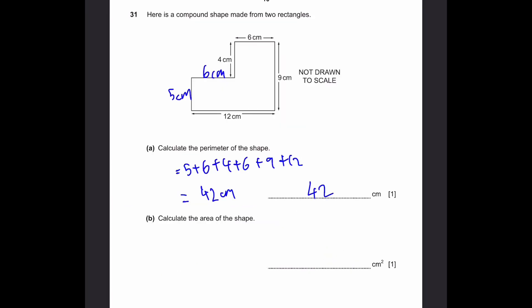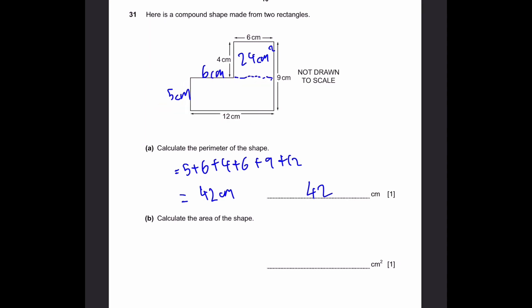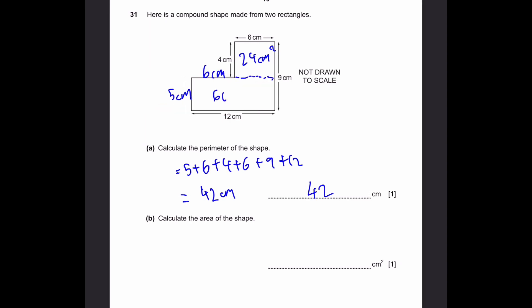Question 31B. Calculate the area of the shape. We split it into two rectangles: the first is 4 times 6 equals 24 centimeters squared, and the second is 12 times 5 equals 60 centimeters squared. So the total area is 24 plus 60 equals 84 centimeters squared.